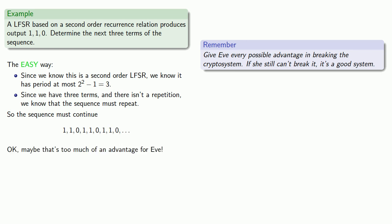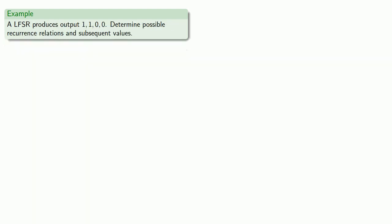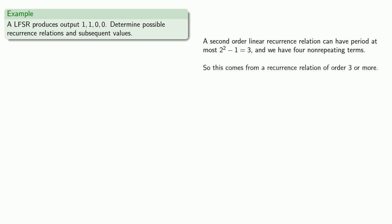Maybe that's too much of an advantage to give to Eve. So let's say we just know that the LFSR has produced output 1, 1, 0, 0, and from this information, let's determine possible recurrence relations and subsequent values. First of all, since a second order linear recurrence relation can have period at most 2^2 - 1, or 3, and we have four non-repeating terms, this has to come from a recurrence relation of order 3 or more.